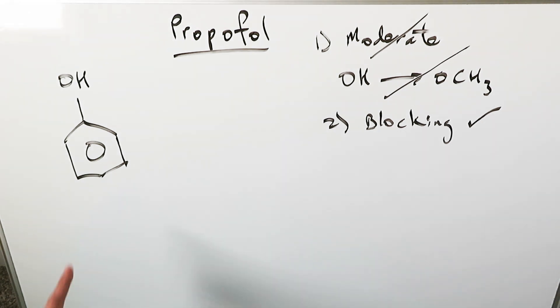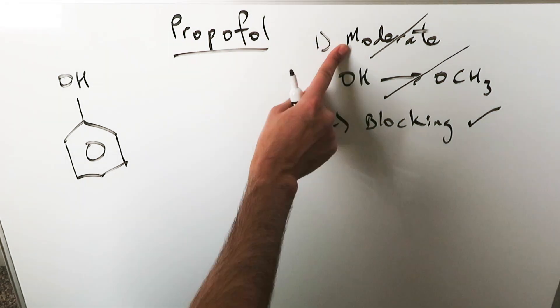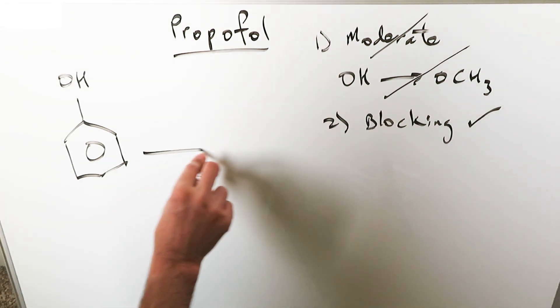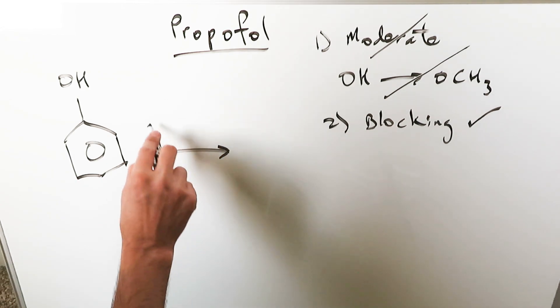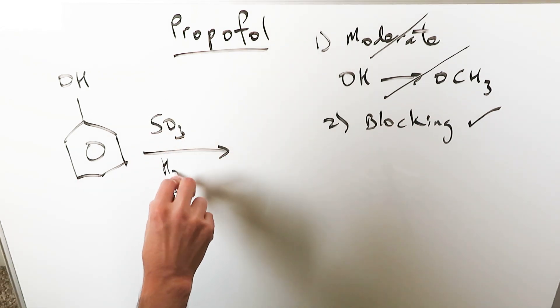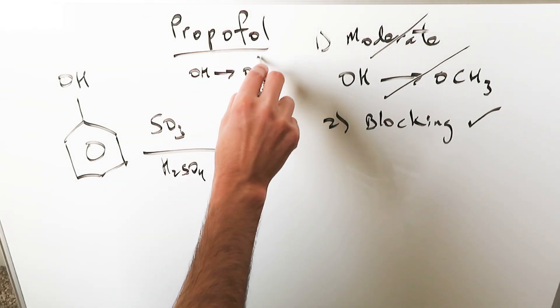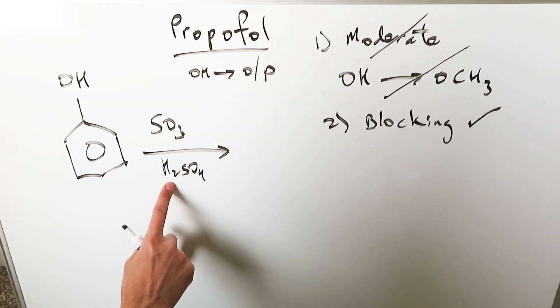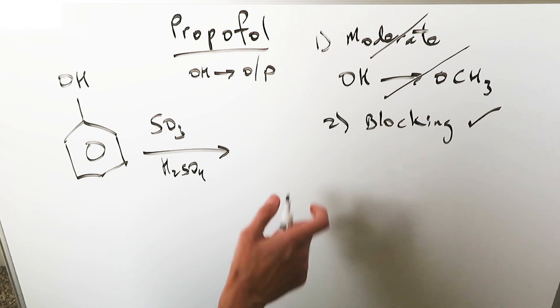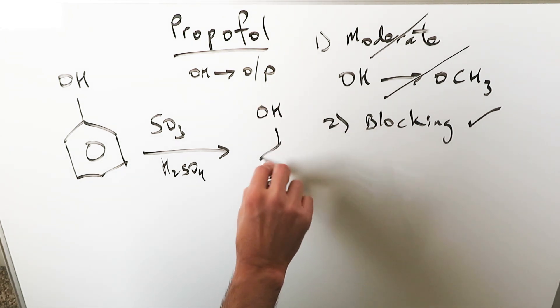We're starting here with the phenol. Keep it as is. No moderation. No weakening of it. I'm going to react it and do a blocking group. SO3 and H2SO4. Remember again the hydroxyl functional group is ortho para director. When I'm doing this sulfonation procedure it's reversible. I will do a sulfonic acid on the para position.